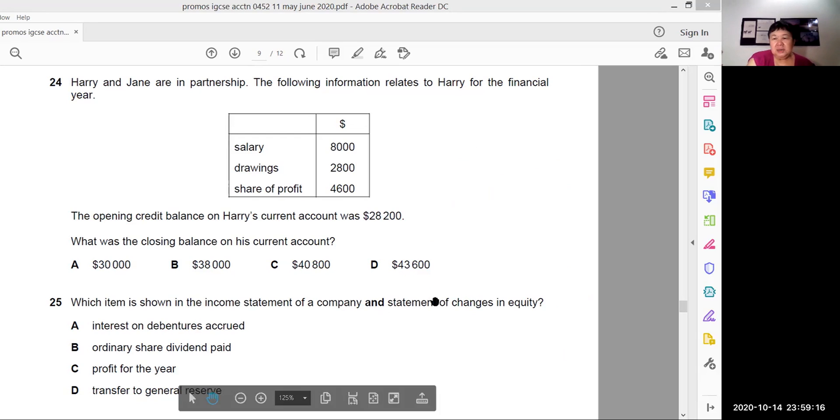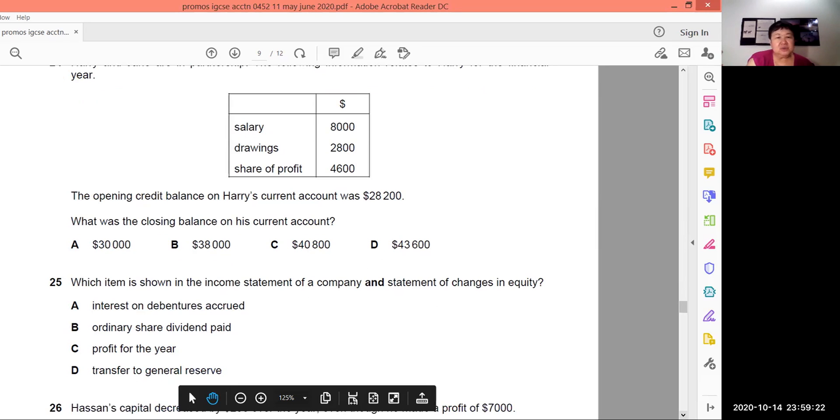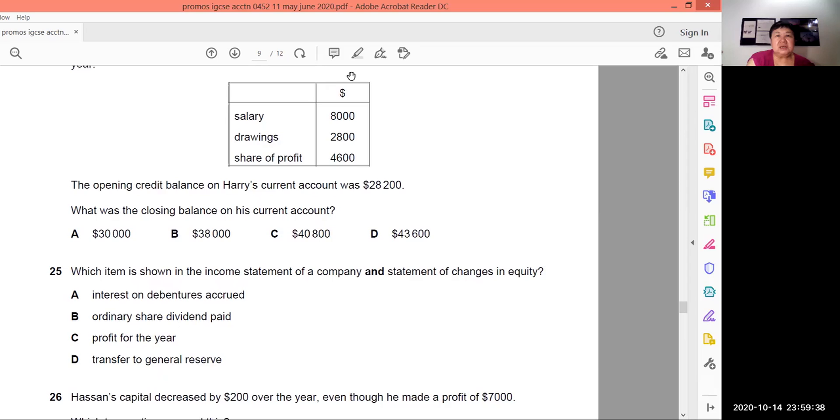My next question I'm looking at is question 25. I used to record on Camtasia. So now I'm using this Zoom. So do forgive me. I'm a bit clumsy. I'm getting the hang of it. So 25, which item is shown in the income statement of a company and statement of changes? Remember statement of changes in equity? So this is a statement of changes in equity. Remember this in your limited companies?